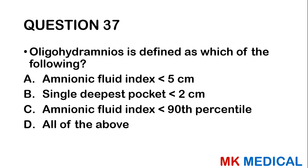Question thirty-seven: Oligohydramnios is defined as which of the following? Amniotic fluid index less than 5 cm; single deepest pool less than 2 cm; amniotic fluid index less than 90th percentile; or all of the above. The amniotic fluid index is normally between 5 to about 25. A single deepest pool is normally 2 to about 8 cm — less than 2 is oligohydramnios. All of the above is the answer.